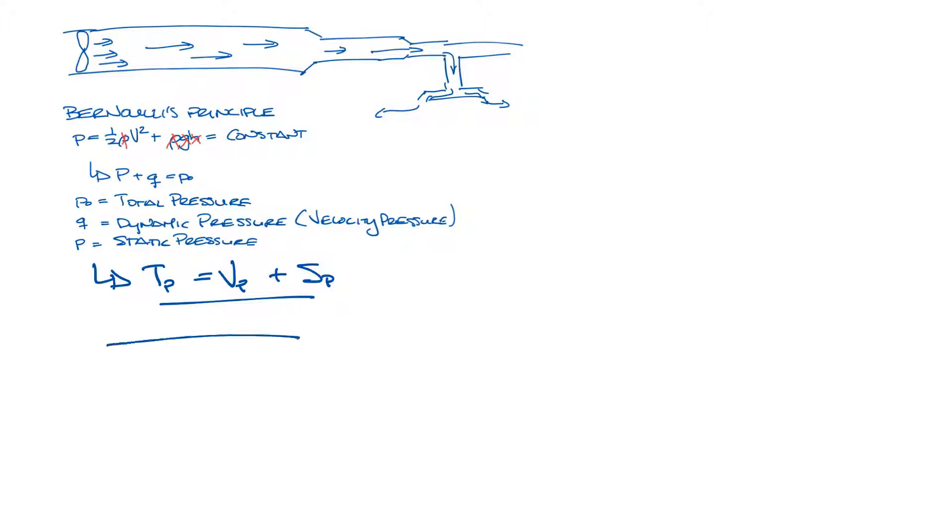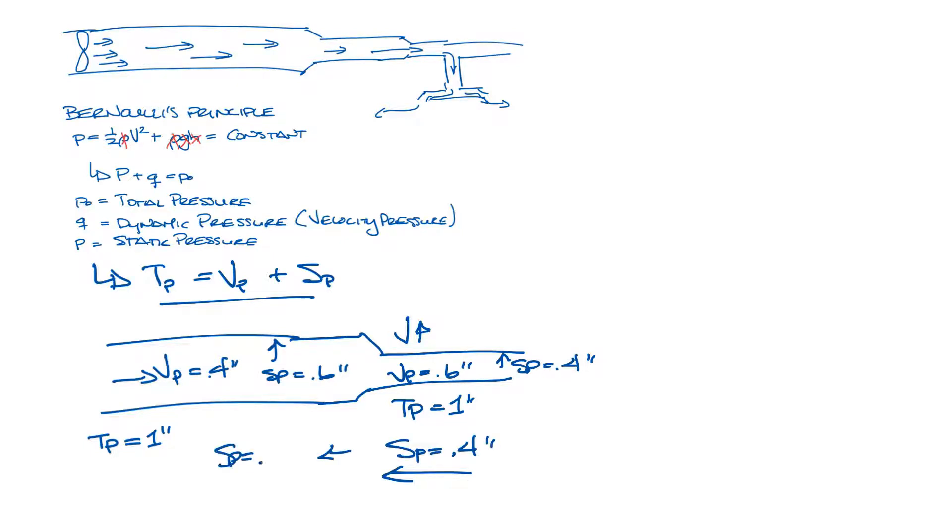So when we have a piece of ductwork, and let's say we have one inch of total pressure, and let's say it's made up of 0.4 inches of velocity pressure and 0.6 inches of static pressure. When it transitions to a smaller section, assuming no friction, your total pressure will stay one inch, but now maybe your velocity pressure went to 0.6 because it sped up, and your static pressure went to 0.4. Or the opposite is true if the airflow is moving in this direction. So maybe your static pressure would go from 0.4 to 0.6, and this is called static regain.